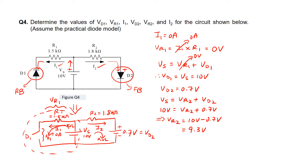Lastly, we need to find the current I2. Using Ohm's law, I2 is simply VR2 divided by the resistance of R2. This will be 9.3 volts over 1.8 kΩ, so the answer for I2 will be equal to around 5.17 milliamps. That's for question 4.